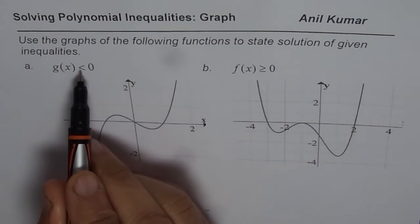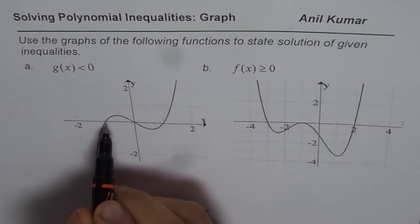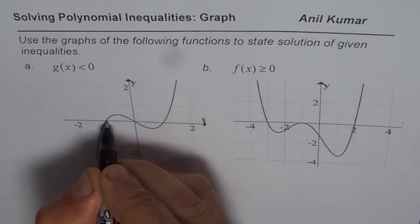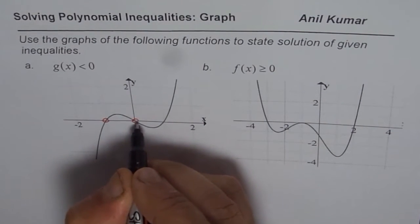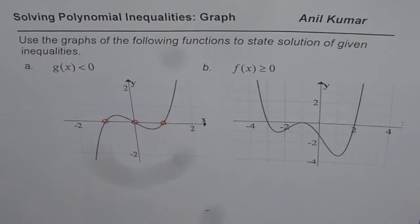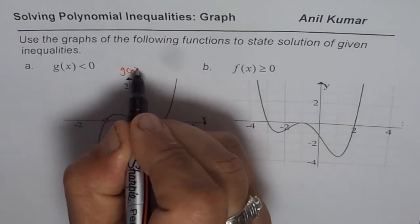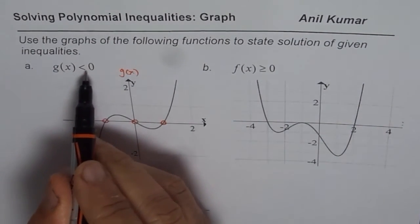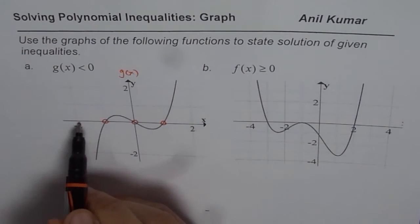When it says g of x is less than 0 that means wherever it is 0 it is not part of our solution. So what we will do is at those zeros we will make a hole, not filled in circles. These are not part of our solution since we are looking for something which is less than 0. Now when we say this is g of x for us,